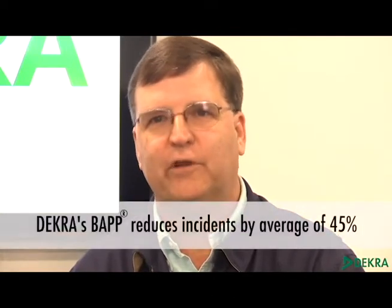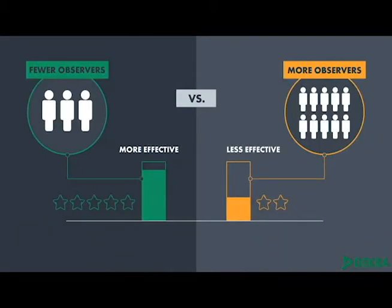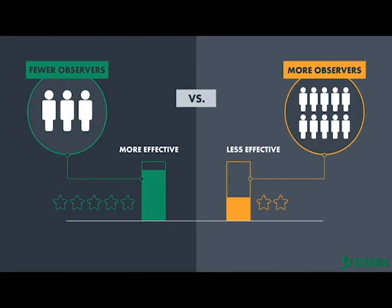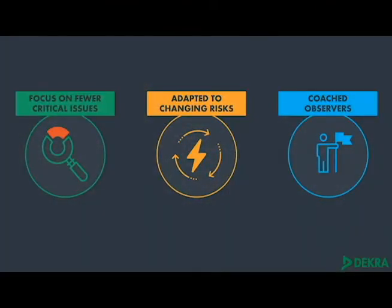The good news is that independent research now shows what works for improving safety and engaging all employees. Specifically, it confirms that DECRA's BAP technology works to reduce incidents by up to an average of 45% by the third year. We can now answer the question of participation versus intensity — having fewer observers doing more observations is more effective. We can also show why we localize, not generalize: results are more effective when observers provide feedback on fewer areas. And data is proving that specialization matters. Clients who focus on fewer critical issues, who adapted to changing risks, and who coached observers also did better than those who did fewer of these activities.